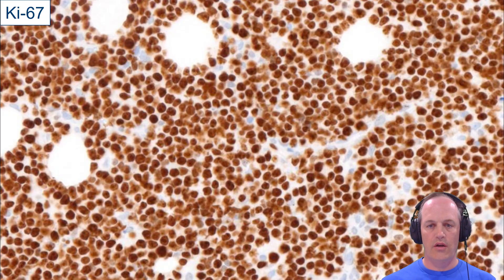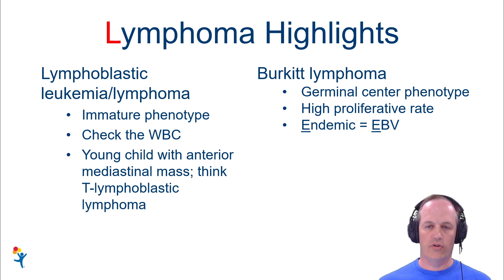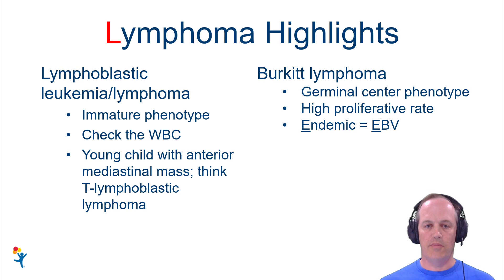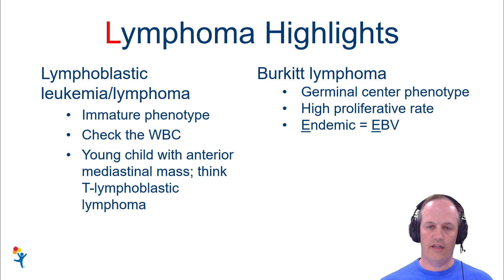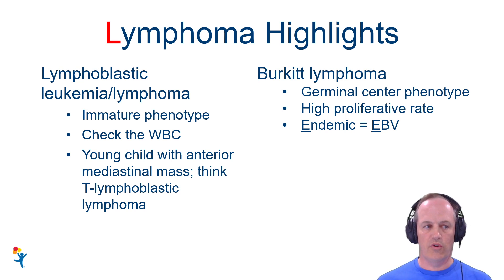Here's the MIB1 / Ki67 - it's staining almost every single nucleus of the tumor. The few nuclei that are negative are endothelial nuclei. For the highlights on lymphoma: lymphoblastic lymphomas are the most common neoplasm in childhood, they have an immature phenotype, and knowing the white count and looking at the peripheral smear is helpful. If you see something in the anterior mediastinum of a child, think T lymphoblastic lymphoma. Burkitt has a germinal center phenotype with a very high proliferative rate, which drives the presence of tingible body macrophages - though even lymphoblastic lymphoma can have them if the proliferative rate is high. Know that the endemic form is more often associated with EBV.